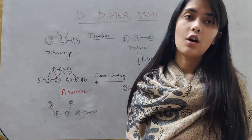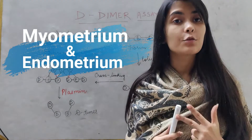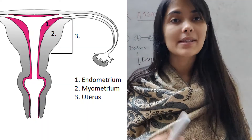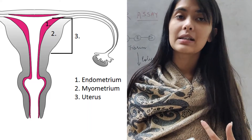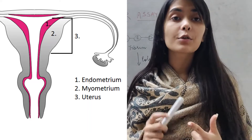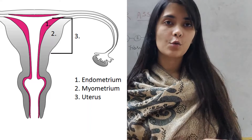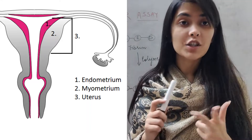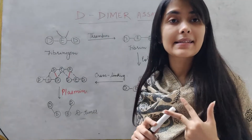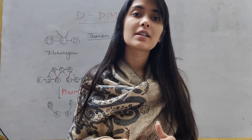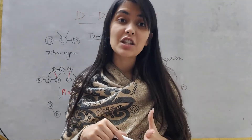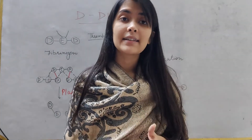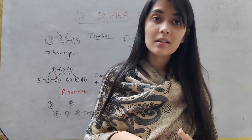Our uterine wall consists of myometrium and endometrium. Myometrium, as the name suggests, is formed of muscle fibers, whereas endometrium is formed of simple cuboidal epithelial tissues and the stroma. This endometrium can further be divided into the functionalis layer and the basalis layer. The functionalis layer is the zone of cyclic changes during the menstrual cycle — it is the layer that sheds off, causing bleeding to occur.